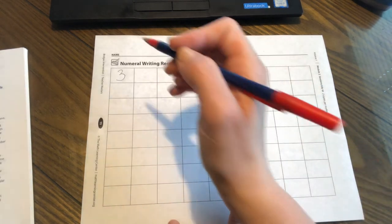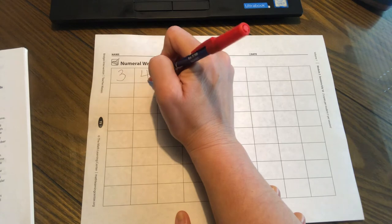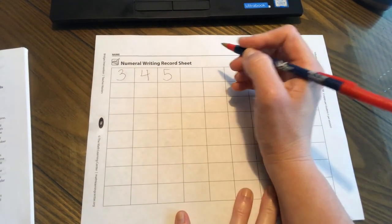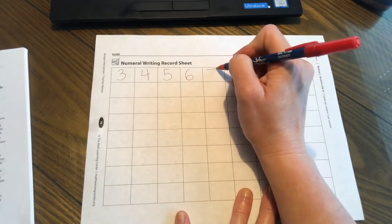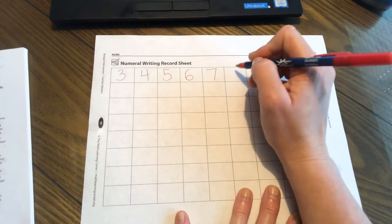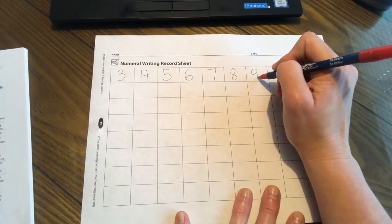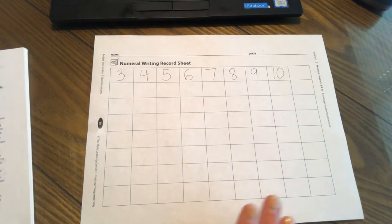All right, let's start at three and let's write. Three, four, five, six, seven, eight, nine, 10. Very good job.